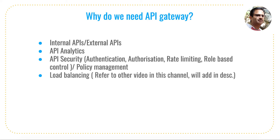The next feature is load balancing — I have a separate video about load balancing in this channel so please check that out for more details. Next is circuit breaking: if a request comes to your service and your service is not responding, and it is taking too long, we need to disconnect it. We can configure the API gateway so that if an API is taking more than, say, 500 milliseconds, it breaks that connection and moves to the next API. The last item is the developer portal, which is very important for API gateways — it holds all documentation and allows you to configure signatures or keys that customers can use.